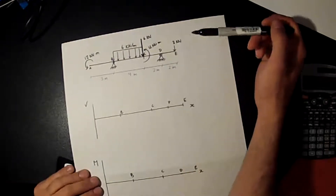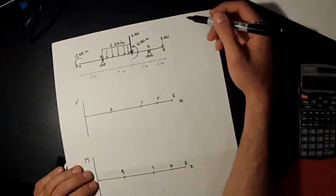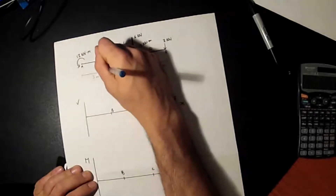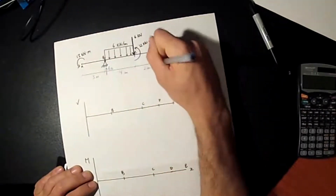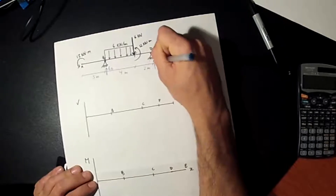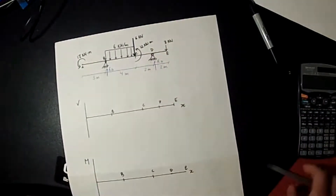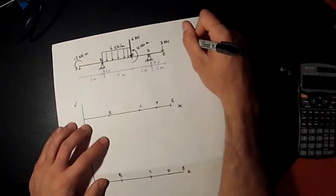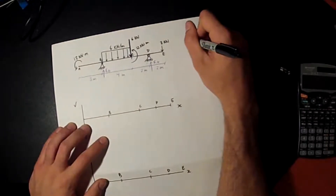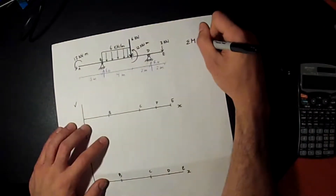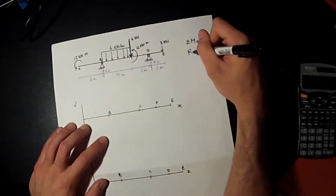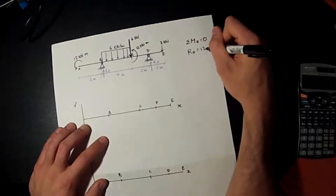First step, we've got to find the reaction forces Rb and Rd. We've got a reaction force at B and one at D. Since this part of the video isn't to find external forces, I'm just going to write down the values. I did the sum of moments at B equal to 0 and found that Rd is equal to 12 kN.